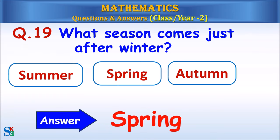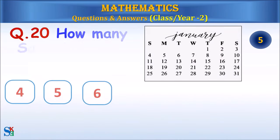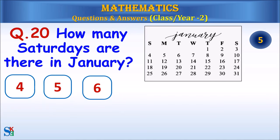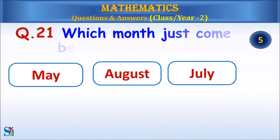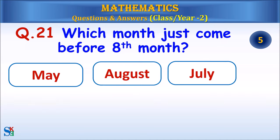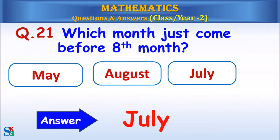Question 19: Which season is just before winter? Answer: Spring. Question 20: How many Saturdays are there in January? Answer: 5. Question 21: Which month just comes before the 8th month? Answer: July.